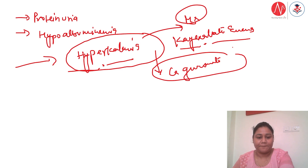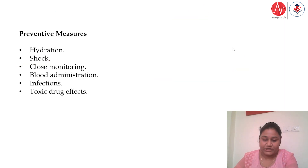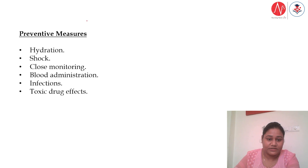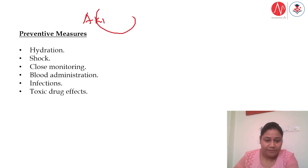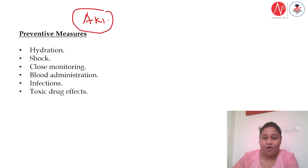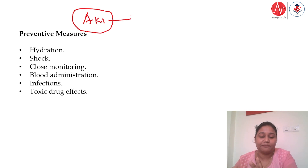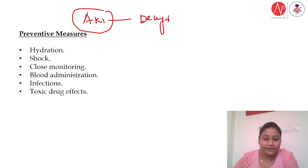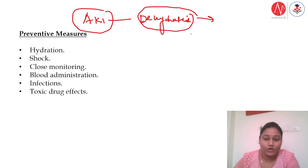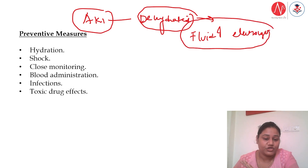Now let's talk about preventive measures for acute kidney injury. First, always make sure the patient is hydrated — maintain fluid and electrolyte balance. This is especially important in renal injury patients. Closed monitoring of fluid and electrolyte levels is essential.